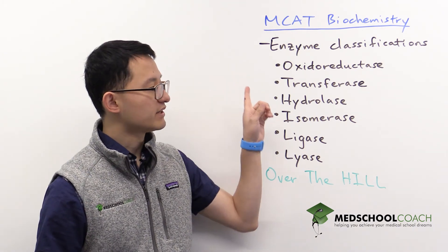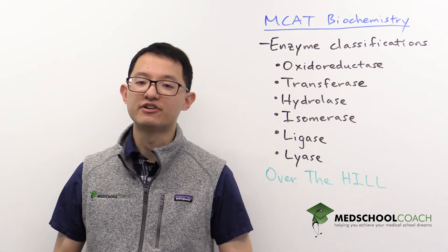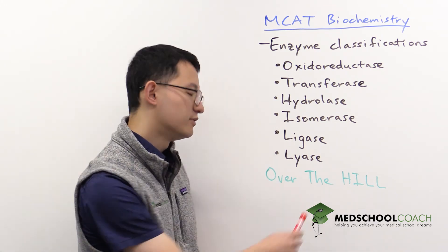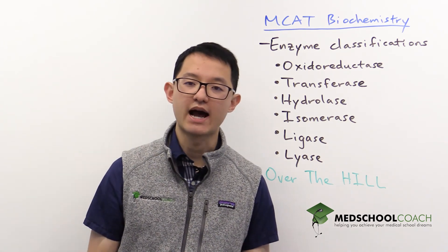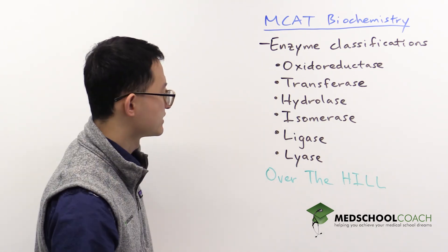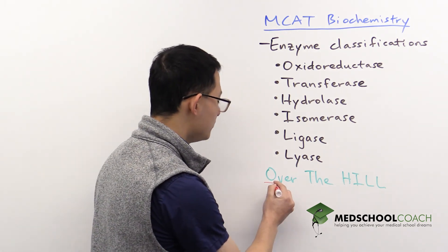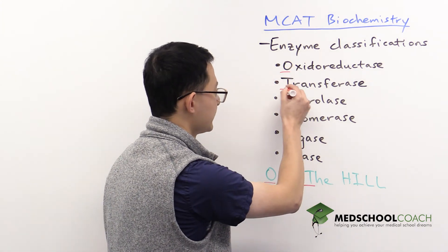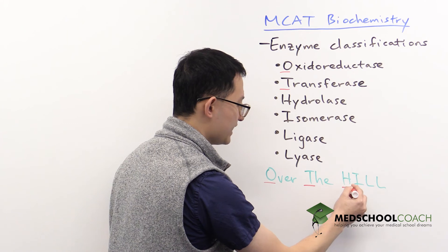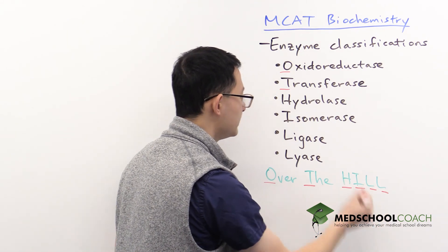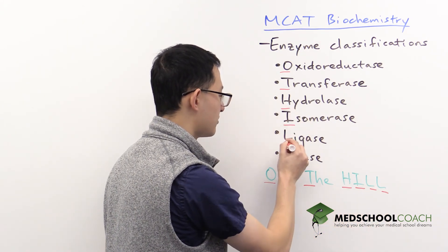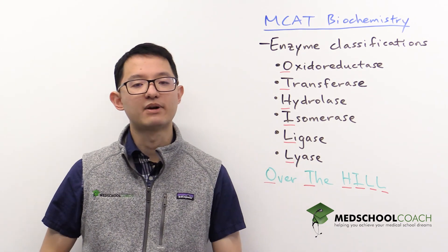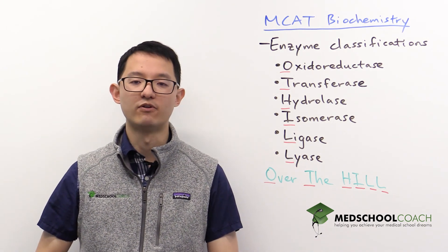These are our different enzyme classifications and our mnemonic for memorizing them is 'Over The Hill.' Pay attention to the capitalized letters: O is for oxidoreductase, T is for transferase, and Hill — H-I-L-L — is for hydrolase, isomerase, ligase, and lyase. So this is a mnemonic for memorizing the different types of enzymes for the MCAT.